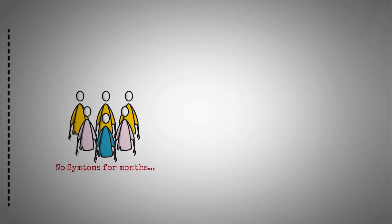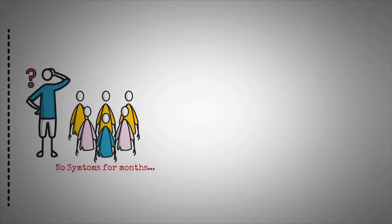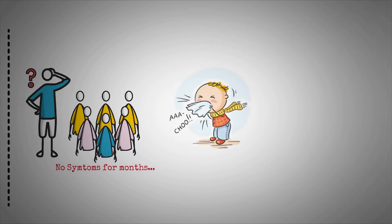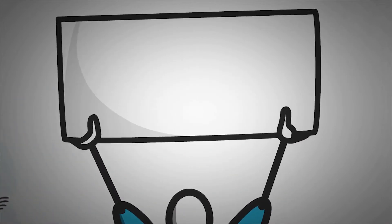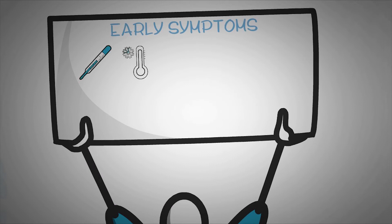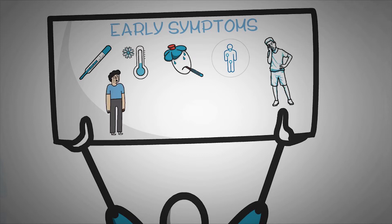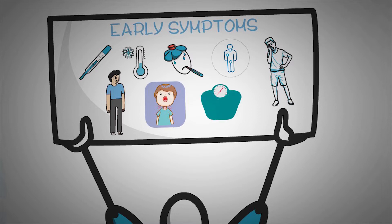Some people with HIV have no symptoms for months or even years after contracting the virus. Partly because of this, 1 in 7 people with HIV in the United States does not know they have it. Around 80% of people with HIV develop flu-like symptoms around 2–6 weeks after contracting the infection. These symptoms are collectively called acute retroviral syndrome. Early symptoms may include a fever, chills, sweating particularly at night, enlarged glands or swollen lymph nodes, weakness, pain including joint pain, a sore throat, thrush or a yeast infection, and unintentional weight loss.